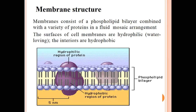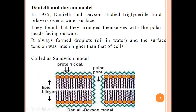Membrane structure consists of a phospholipid bilayer combined with intrinsic proteins in a fluid mosaic arrangement. The surfaces of the cell membrane are hydrophilic; the interiors are hydrophobic. The outward-facing side is hydrophilic while the inner side, facing toward the cytoplasm, is hydrophobic.